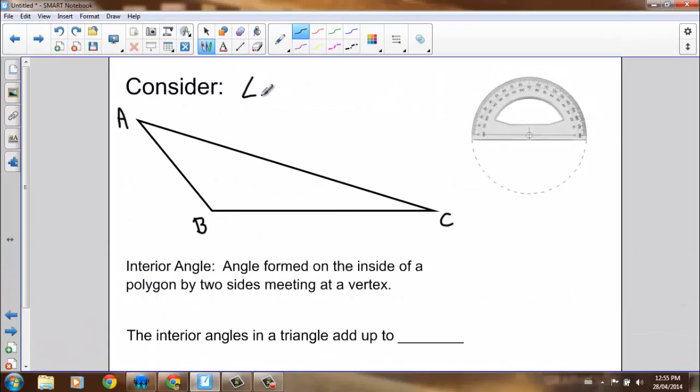Let's consider triangle ABC. We know it's a polygon because it's a closed figure. It's a triangle because it has three sides. And we want to try and figure out what the interior angles in a triangle add up to. Interior angles are the angles formed on the inside of a polygon by two sides meeting in a vertex.